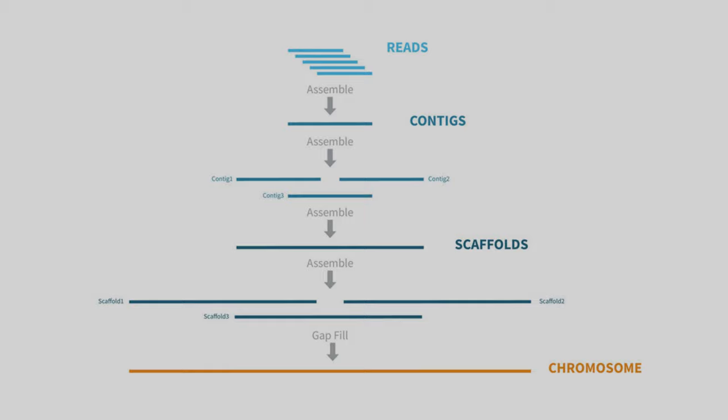During the de novo assembly process, partially or sometimes fully overlapping reads are assembled into one or more contigs. Sets of overlapping or non-overlapping contigs are joined into one or more scaffolds. Sets of overlapping or non-overlapping scaffolds are joined into a single chromosome.